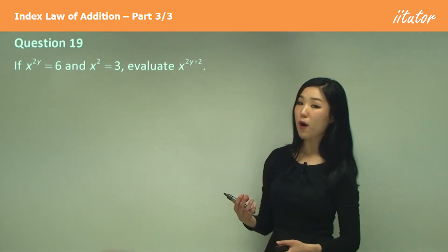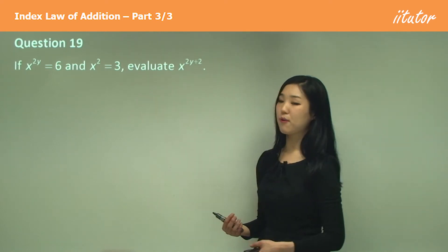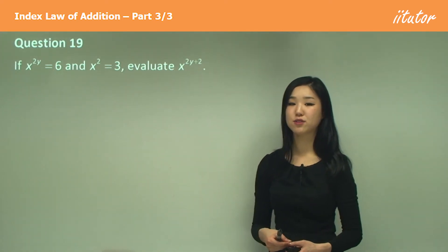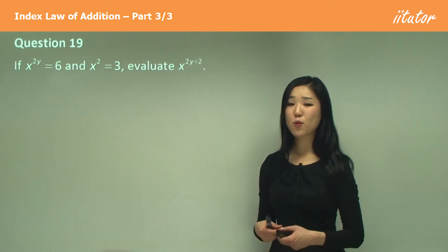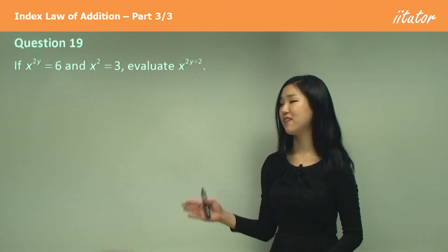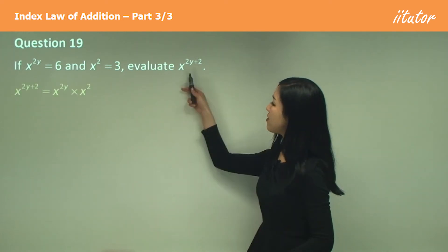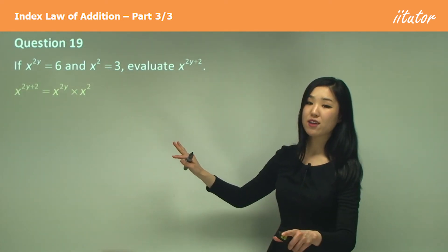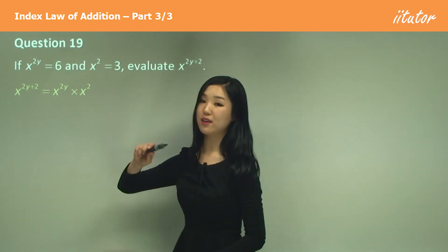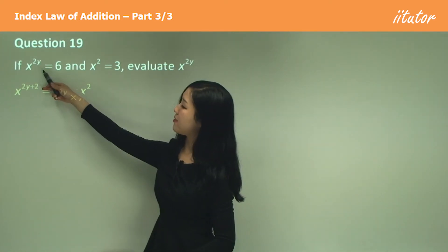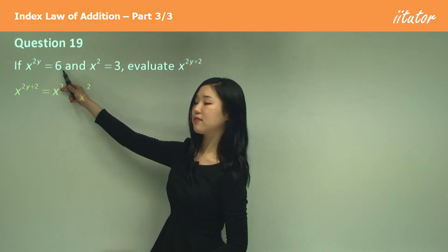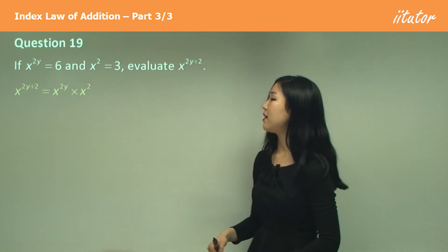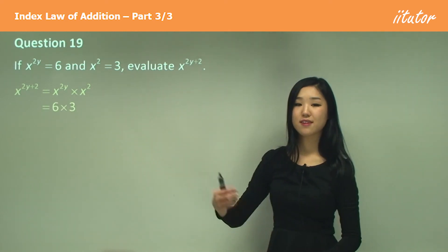This time they give us that x to the power of 2y is 6 and x squared is 3, and they want us to evaluate x to the power of 2y plus 2. We apply the same method — since we're adding the indices, we split it into x to the power of 2y times x squared. x to the power of 2y is 6, and x squared is 3. So 6 times 3 is 18. That's the answer.